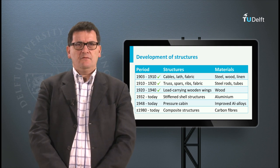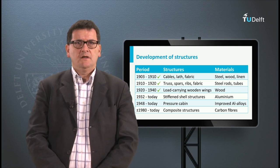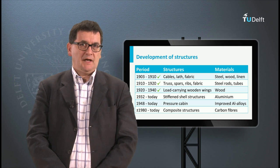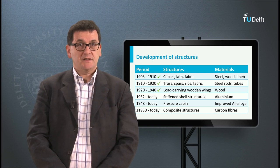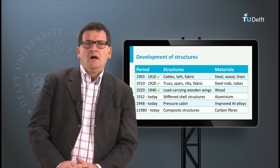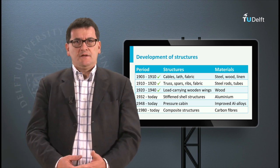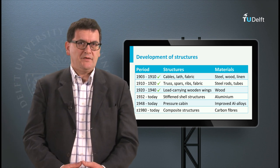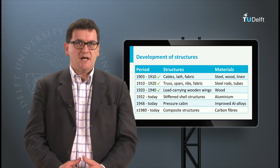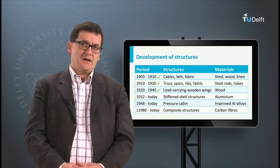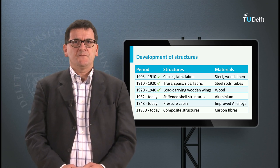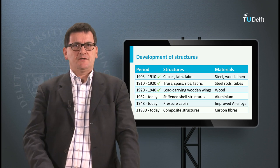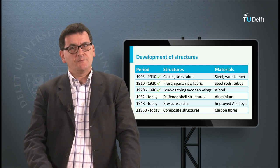As you can see in the table, from the 1930s aluminium entered the aircraft industry. After the Second World War, the jet engine was introduced in civil aviation, which enabled airlines to fly long distances. These flights are performed at high altitudes, which required pressure cabins.